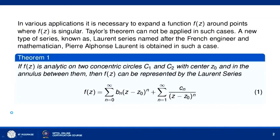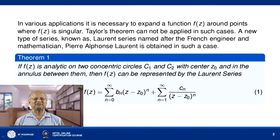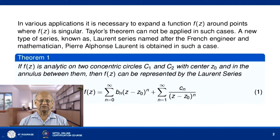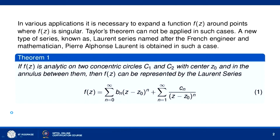Laurent series is named after the French engineer and mathematician Pierre Alphonse Laurent, and the theorem goes like this. If f(z) is analytic on two concentric circles C1 and C2 with center z0 and in the annulus between them, then f(z) can be represented by the Laurent series: f(z) = Σ(n=0 to ∞) b_n (z - z0)^n + Σ(n=1 to ∞) c_n / (z - z0)^n.